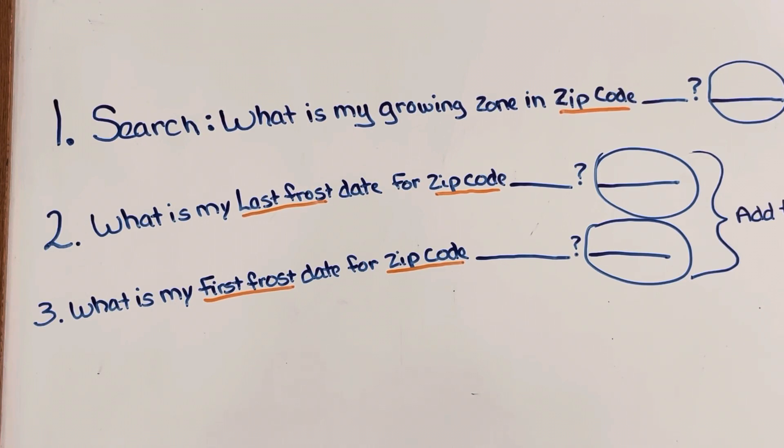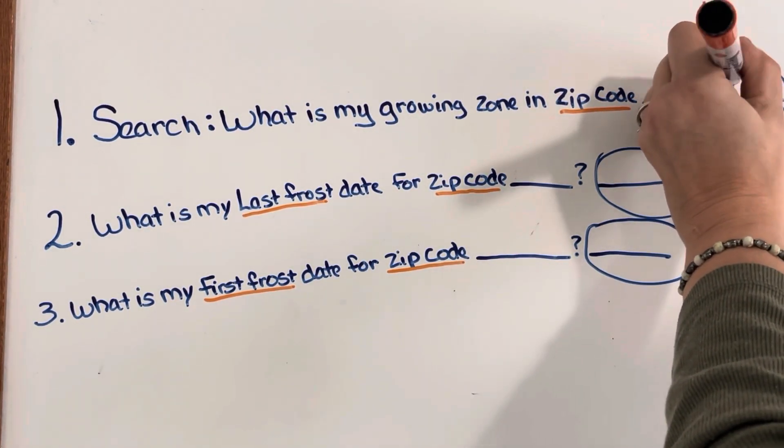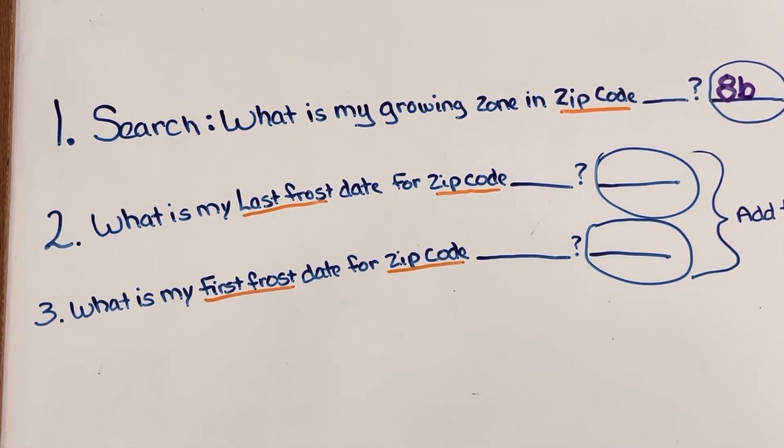Then you're gonna enter your zip code. So once you do that, what is my growing zone and zip code, then put the zip code where you're going to be planting and it'll give you the growing zone. I'm just gonna use my growing zone as an example. Make sure you write it down somewhere. My growing zone is 8B, so I wrote it down 8B. I know that there's some other areas in the US that are also growing zone 8B but that doesn't mean that our planting time or the things that we want to plant can grow in different states or different areas.